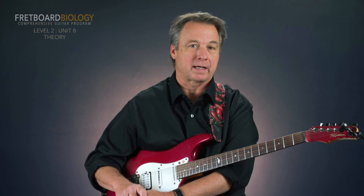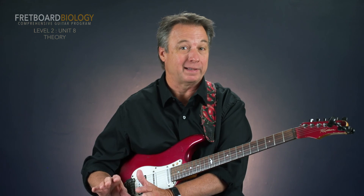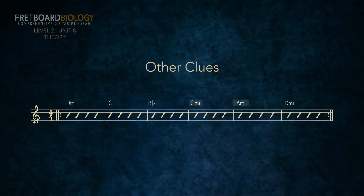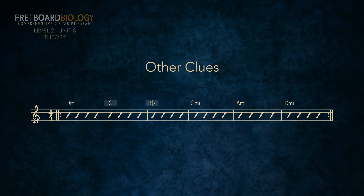There are other clues in both of these progressions. Obviously the last chord offers a clue, as it's often a tonic chord, but that indicator is not 100% reliable. Check out the roots of the G minor and the A minor — they're a whole step apart. There's only one place in the harmonized natural minor scale where two minor triads are positioned one whole step apart, and that's between the 4 minor and the 5 minor. The roots of the B flat major and the C major are a whole step apart. And there's only one place in the harmonized natural minor scale where two major triads are positioned one whole step apart, and that's between the flat 6 major and the flat 7 major.